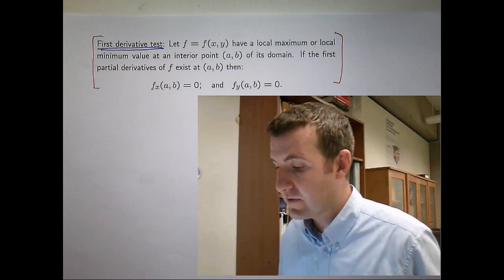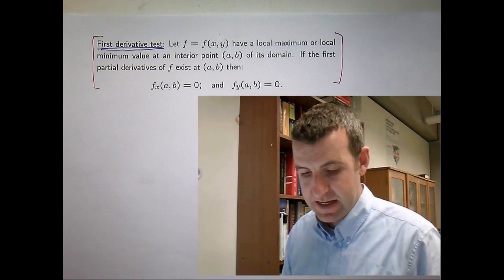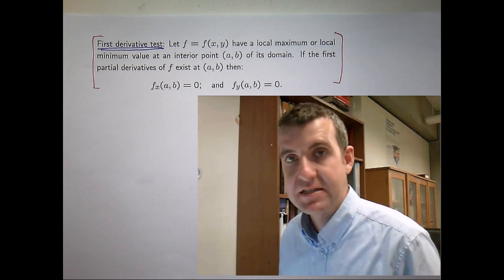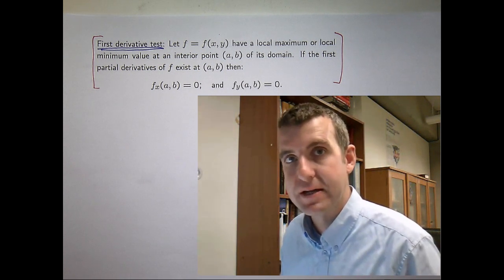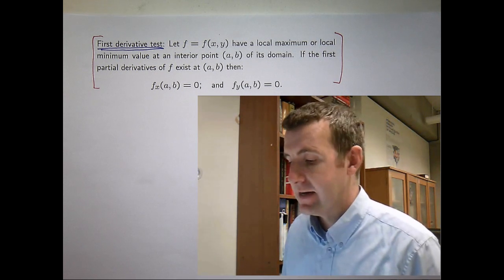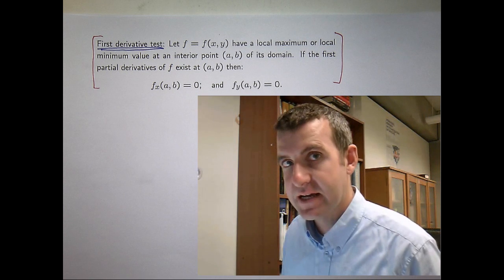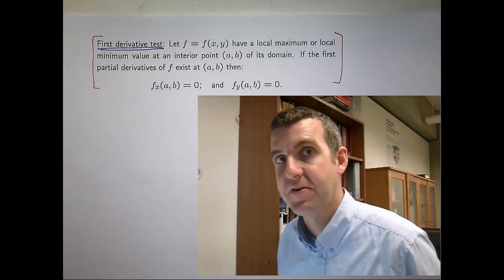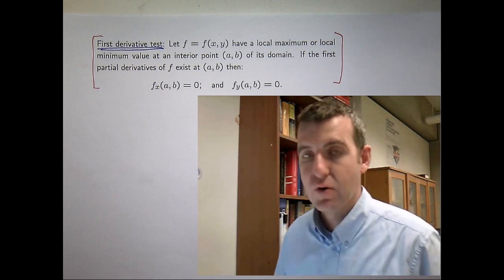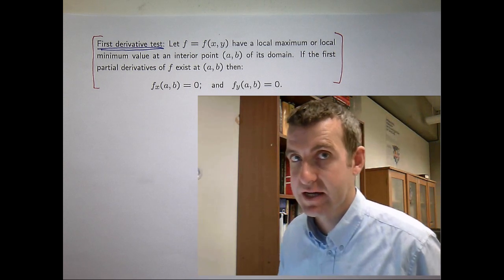So let's see if we can prove it and see how it works. Now the first derivative test of course is a very important component in locating the critical points of a function. Now there's also a second derivative test which enables you to classify these critical points. Do they lead to local max, local min or a saddle point like a point of inflection?